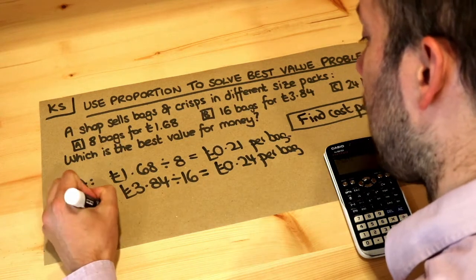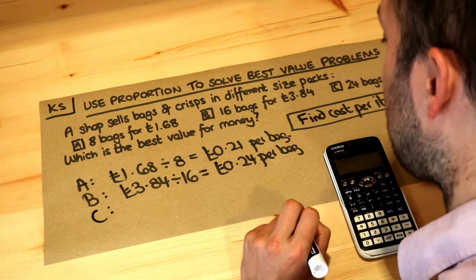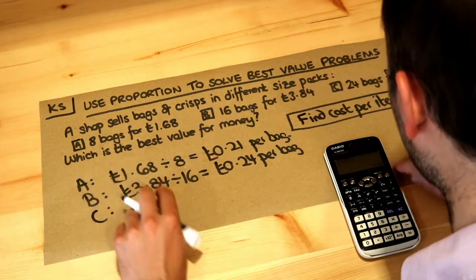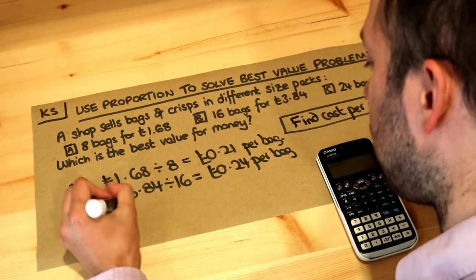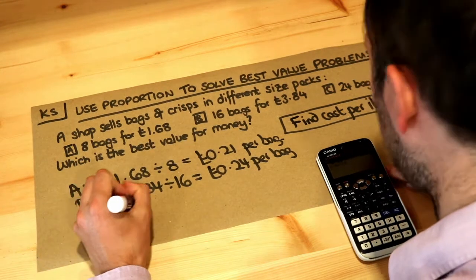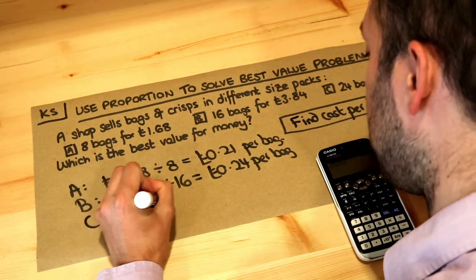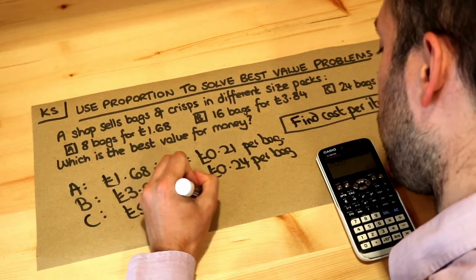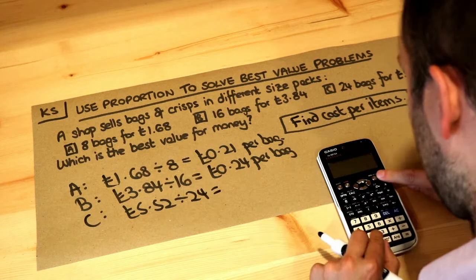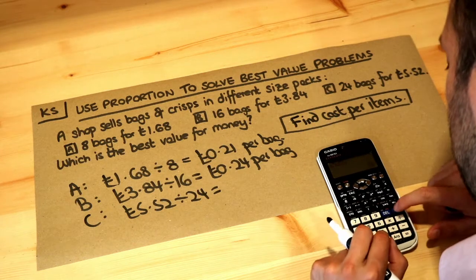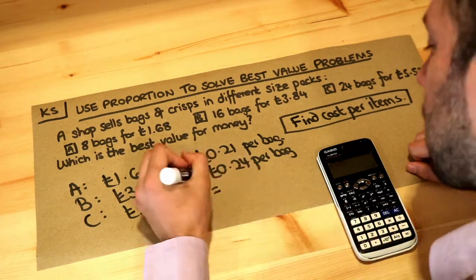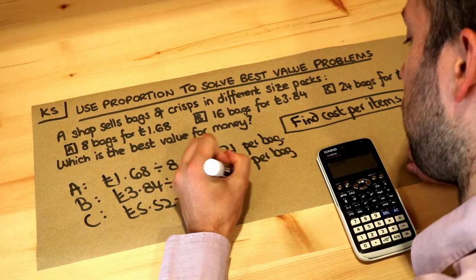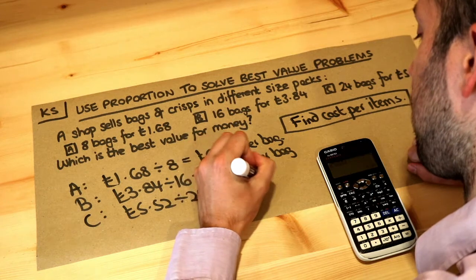And then in multi-pack C, 24 bags for £5.52. So we do £5.52 divided by 24, and that's 23p per bag, so 0.23.